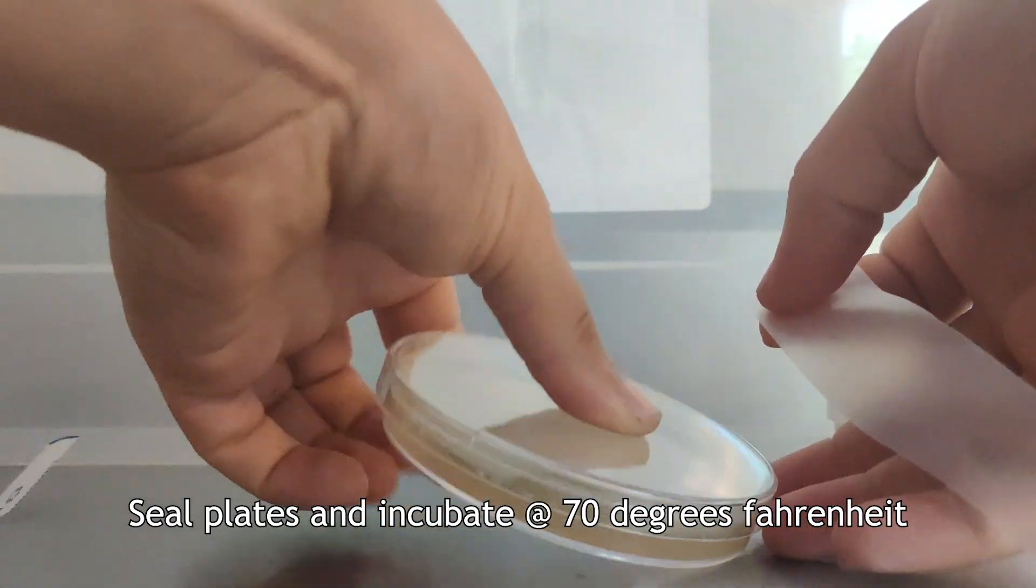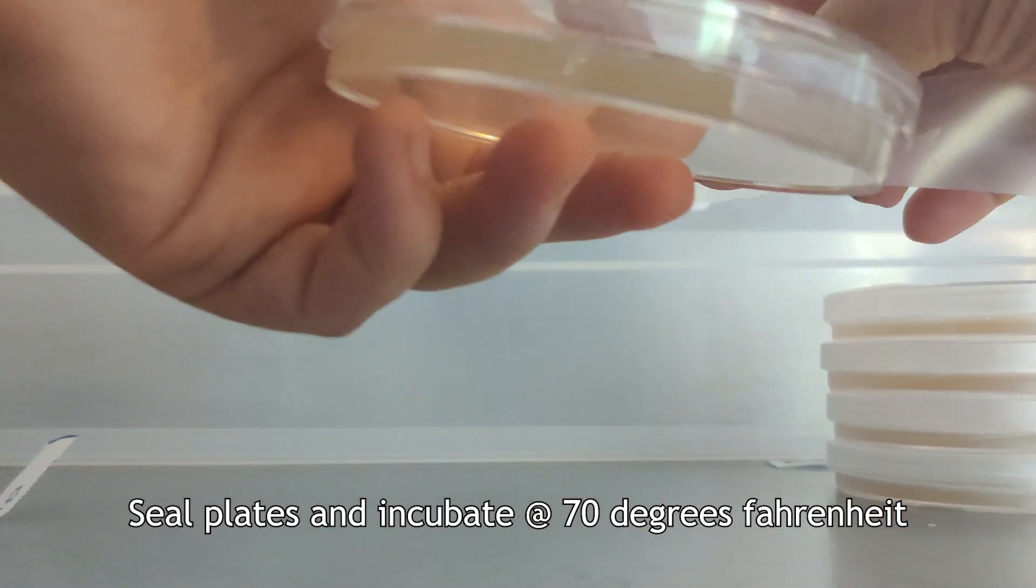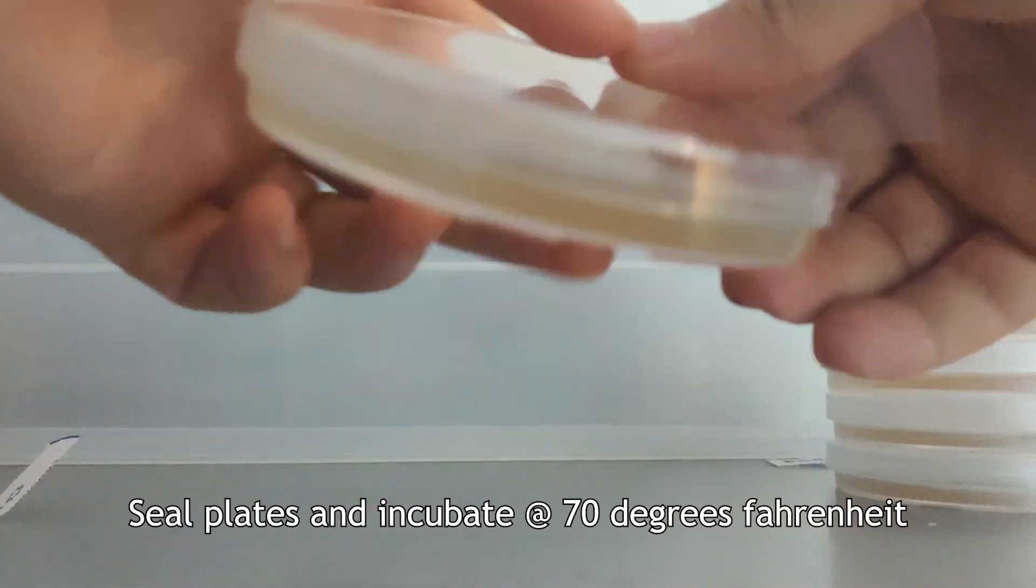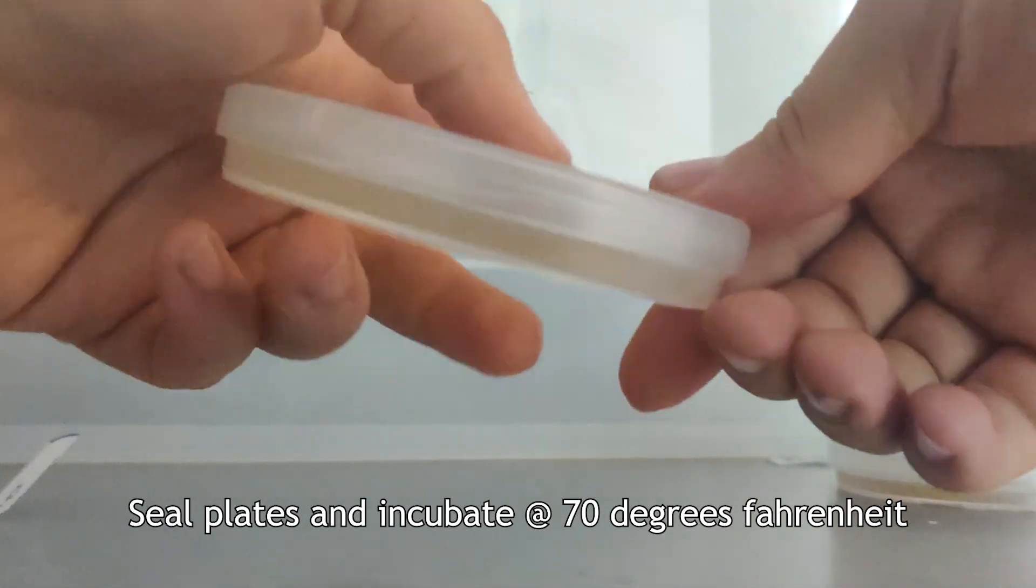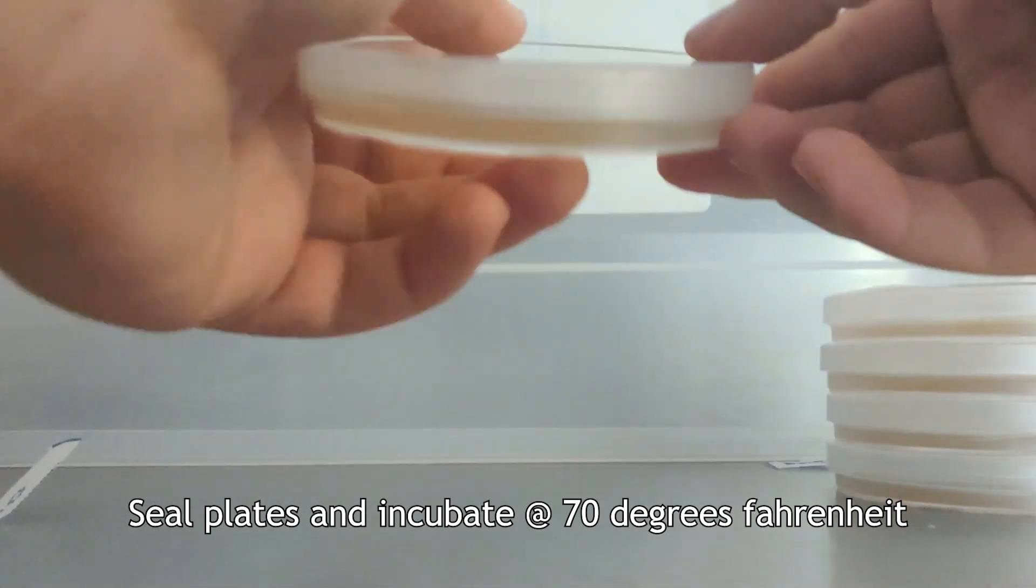Place the plates in a dark, low traffic area at about 70 degrees Fahrenheit. The ideal germination temperature varies depending on the variety of mushroom you are growing, but 70 degrees is typically a good starting point for most varieties.